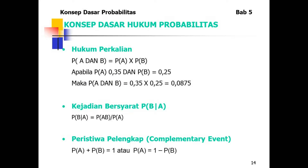Hukum perkalian mempunyai rumus: P(A dan B) = P(A) × P(B). Apabila P(A) = 0,35 dan P(B) = 0,25, maka P(A dan B) = 0,35 × 0,25 = 0,0875. Kejadian bersyarat: P(B|A) = P(B∩A) / P(A). Komplemen: P(A) + P(B̄) = 1, atau P(A) = 1 − P(Ā).